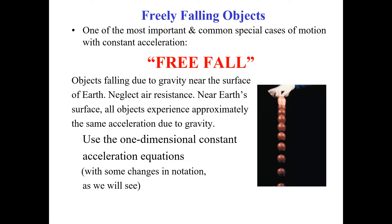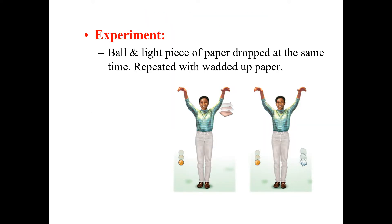Just as we have various equations for constant acceleration in one dimension to find solutions to problems, we will utilize those same equations here for a freely falling body. However, in this particular condition, we replace the constant acceleration 'a' with 'g', because gravitational acceleration is normally denoted by the small letter g, and it has an approximate value.